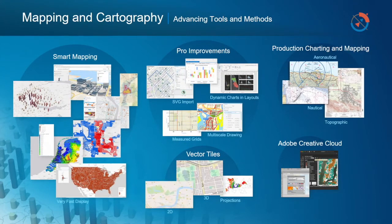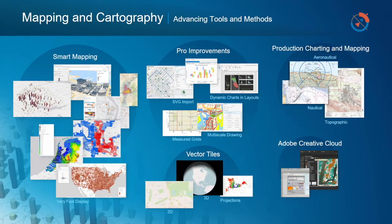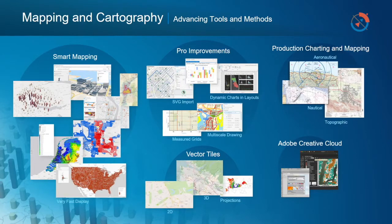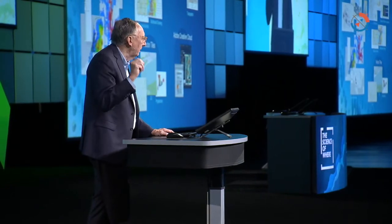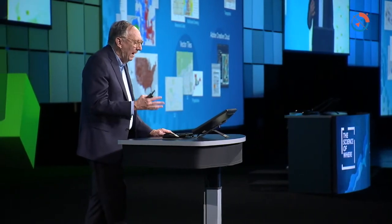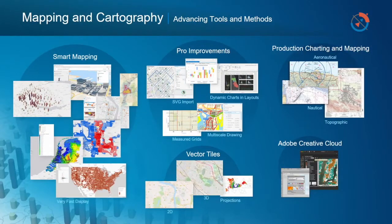Our work in mapping and cartography continues to advance the tools. Smart mapping tools are improving not just with 2D cartography but 3D thematic representations. In the Pro space, we've added new tools for cartography: measured grids, multi-scale drawing, dynamic charts and layout — something many of you have asked for. Production charting and mapping in topo, aeronautical, and nautical — these tool sets are also progressing nicely.